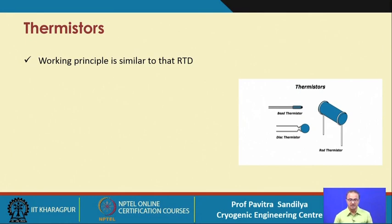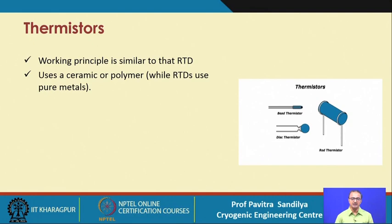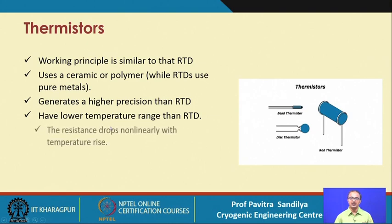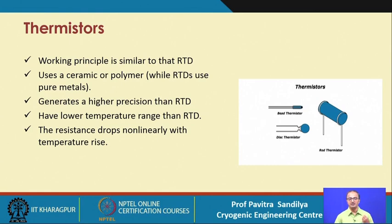The thermistor is similar in principle to the RTD, but uses ceramic or polymeric material rather than metallic material. It gives very high precision and works well, but its operating temperature span is lower than RTDs. The resistance drops non-linearly with temperature rise — unlike the RTD — and we always prefer devices with as linear a response as possible. The RTD is best in this regard, giving almost linear resistance variation, so only two calibration points are needed, whereas non-linear devices require more standards.